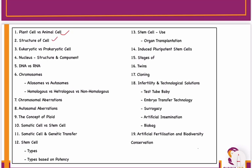Then we will move on to the structure of the cell. You have to do the difference between eukaryotic cells and prokaryotic cells, along with examples — which organisms have prokaryotic cells and which organisms have eukaryotic cells.